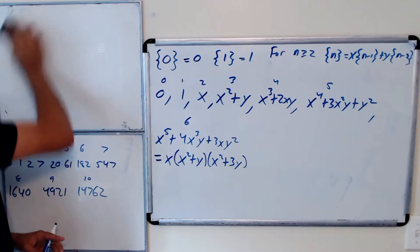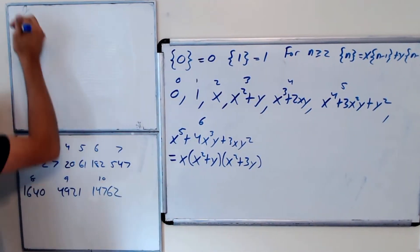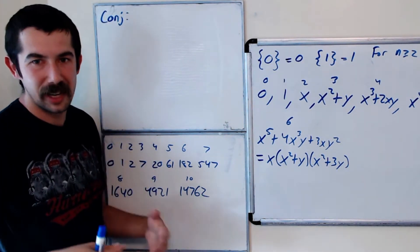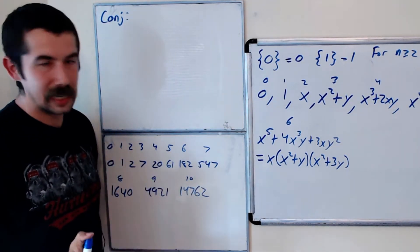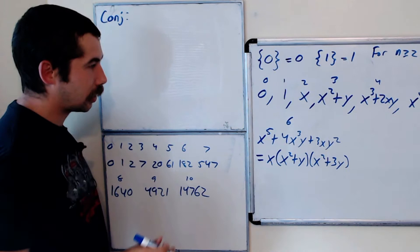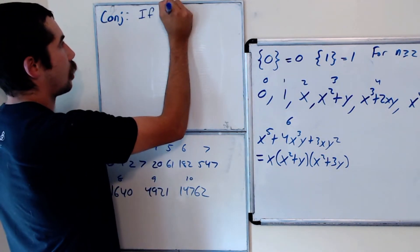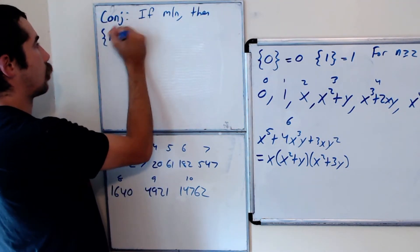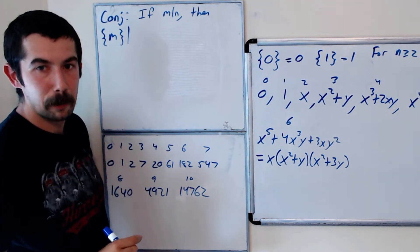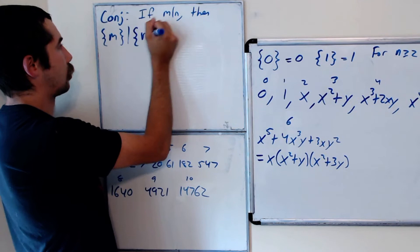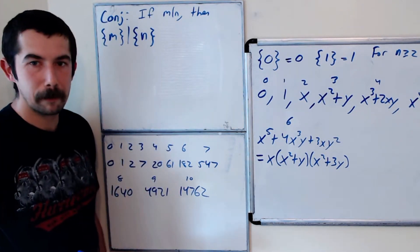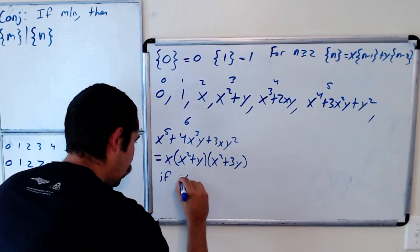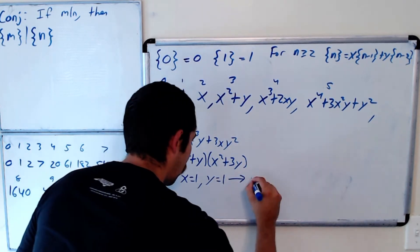Let's write down a conjecture — if you're not familiar with that term, it's our idea that we want to turn into a theorem, but we haven't proved it yet. Our conjecture is: if m divides n, then the mth Lucas polynomial divides the nth Lucas polynomial. And why do we want to show this? Because if we substitute x = 1 and y = 1, we get the Fibonacci sequence.